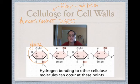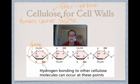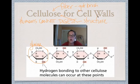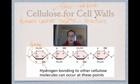Cellulose is made by plants and they use it for cell walls. It is one of the structural carbohydrates — those cell walls help give support and structure to the plant. That's why plants can stand upright even though they don't have any bones; the cellulose in their cell walls helps them stay upright.